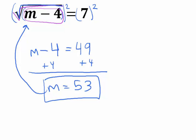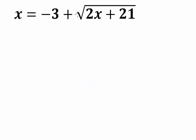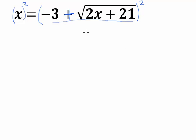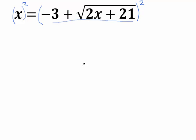Let's do one more, a little more complicated: x equals negative 3 plus the square root of the quantity (2x plus 21). You may be tempted to just square both sides, but you can't just square one piece — you'd have to square everything. If you imagine squaring that entire term like a binomial, the first and last terms would be fine, but the middle term would still have a square root in it. So you'd still end up with some numbers plus some number times the square root of (2x plus 21), which is problematic.